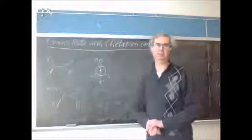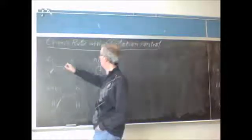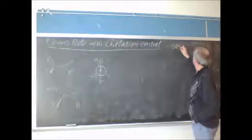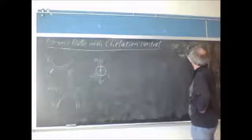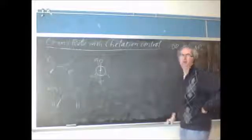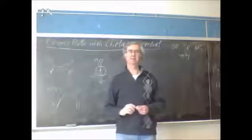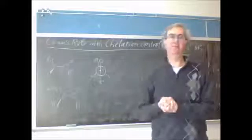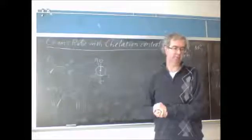Okay, so the chelation control Cram's rule applies when you have something like an oxygen. This could also be something like sulfur nearby, and that's because now we don't have these groups being totally uninvolved, they will actually bind to the metal and they will tend to direct the metal towards a certain side.